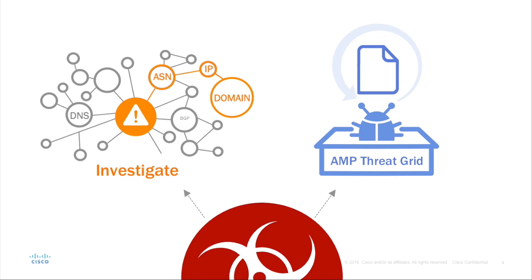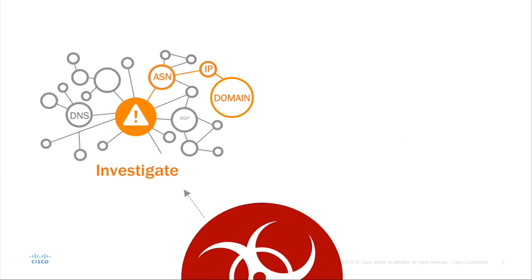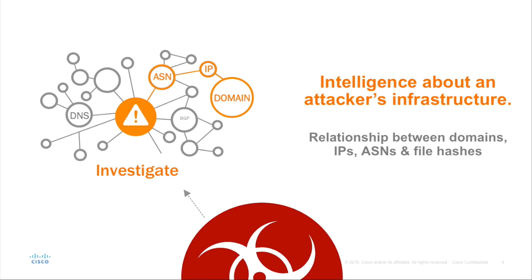This threat intelligence feeds into two powerful security products: Investigate and AMP Threat Grid. Investigate provides threat intelligence about domains, IPs, ASNs, and file hashes across the internet. We draw our conclusions from our diverse dataset of 80 billion daily DNS requests and live views of network connections. We then use a combination of human intelligence and statistical models to automatically pinpoint attackers' infrastructure across the internet and to predict future threats.